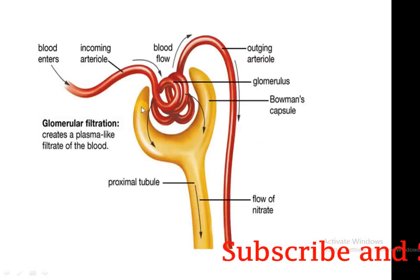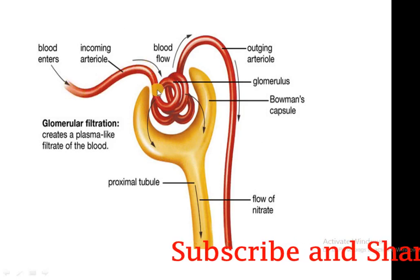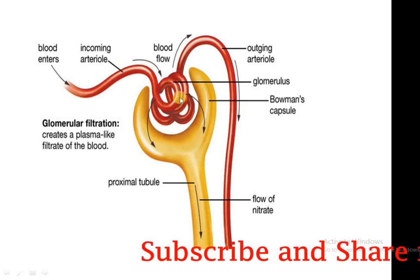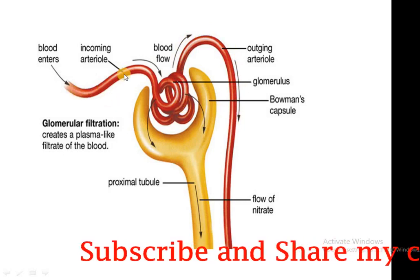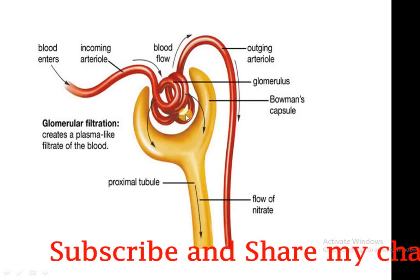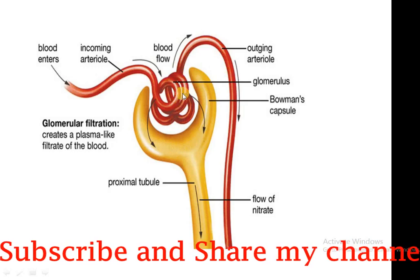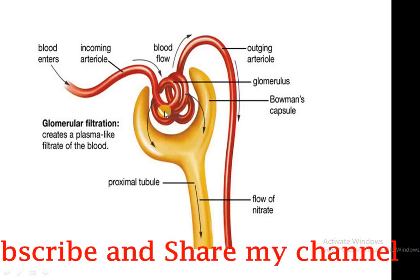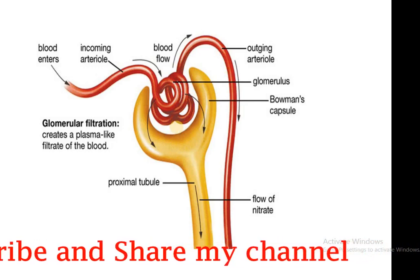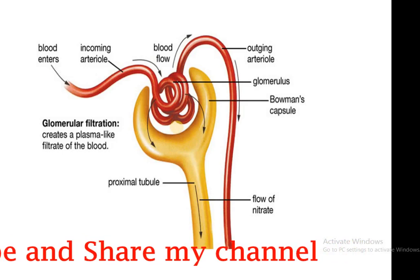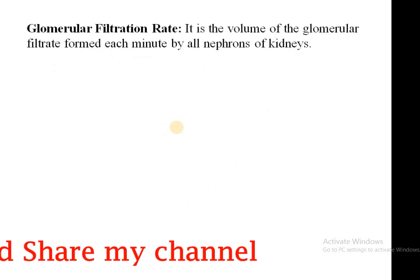This is the Bowman's capsule. This is the afferent arteriole entering the Bowman's capsule, making a tuft of arteries called the glomerulus, and then coming out as an efferent arteriole. So there is an afferent arteriole carrying blood to the glomerulus and an efferent arteriole taking blood away. This is the area where filtration takes place. Remember the concept of filtration is the same as the concept of edema.